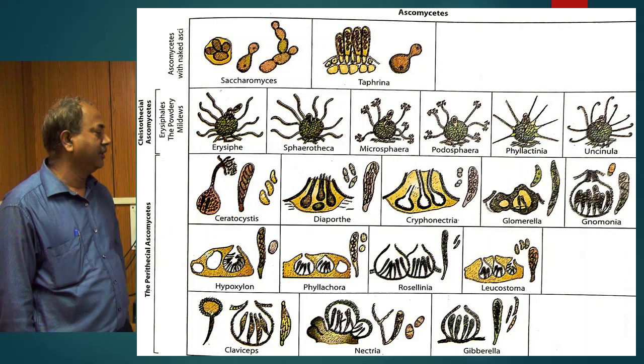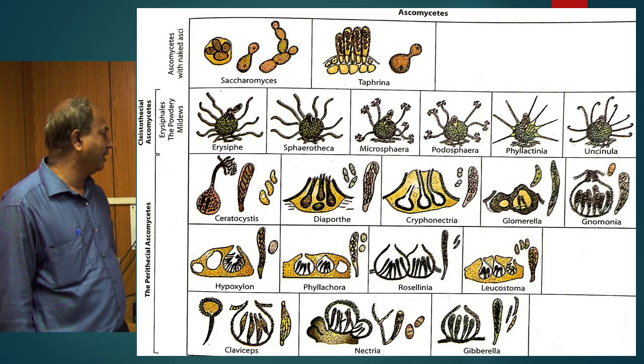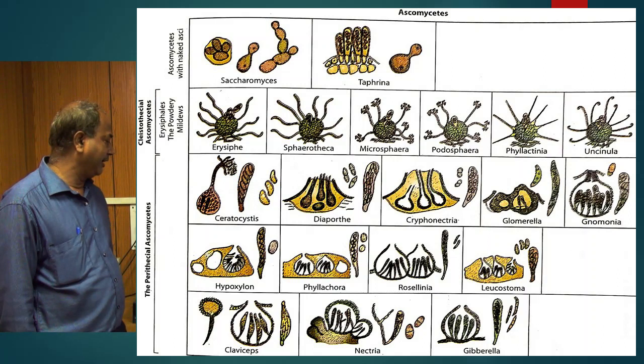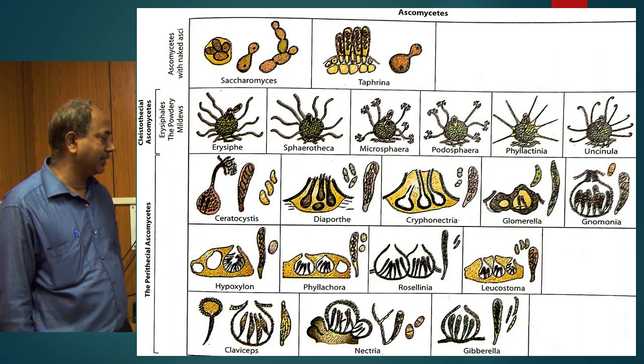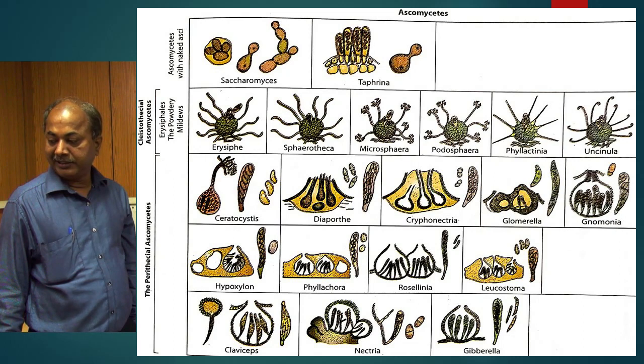Under perithacial ascomycetes, Ceratocystis, then Diaporthe, then Cryphonectria, then Glomerella — perithacial Glomerella is there — and then Gnomonia, then Hypoxylon, then Phyllachora, then Rosellinia, then Leucostoma. These are the genera. Then Claviceps, Nectria, and Gibberella — these are the genera under this group.